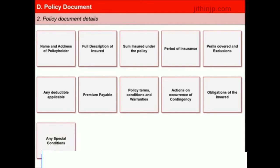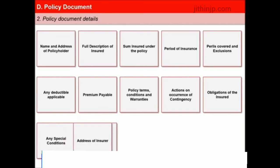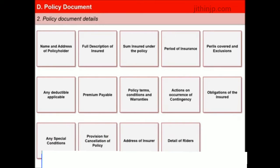Any special conditions, provisions for cancellation of the policy on grounds of misrepresentation, fraud, non-disclosure of material facts or non-cooperation of the insured, the address of the insurer to which all communications should be sent, details of riders if any, and details of grievance redressal mechanism and address of ombudsman. Every insurer has to inform and keep the insured informed periodically on the requirements for lodging a claim and the procedures to follow to enable the insurer to settle a claim early.